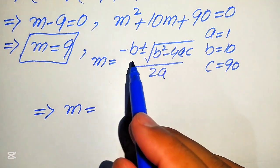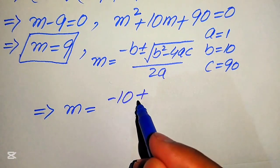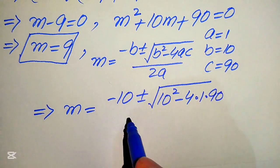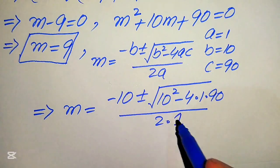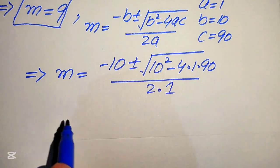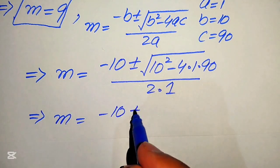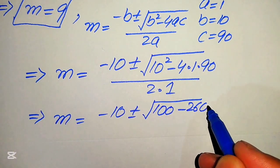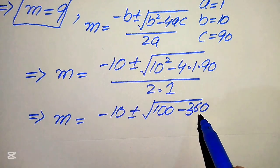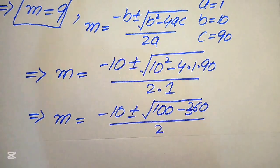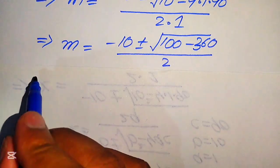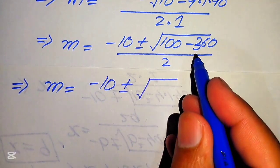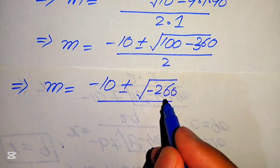Substituting, we have m equals negative 10 plus or minus the square root of 10 squared minus 4 times 1 times 90, divided by 2 times 1. This simplifies to m equals negative 10 plus or minus the square root of 100 minus 360, all divided by 2. That gives m equals negative 10 plus or minus the square root of negative 260, divided by 2.